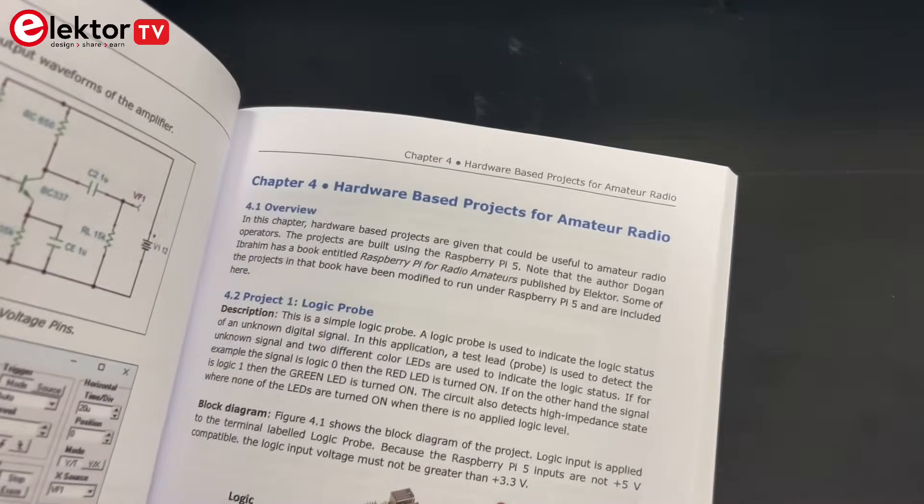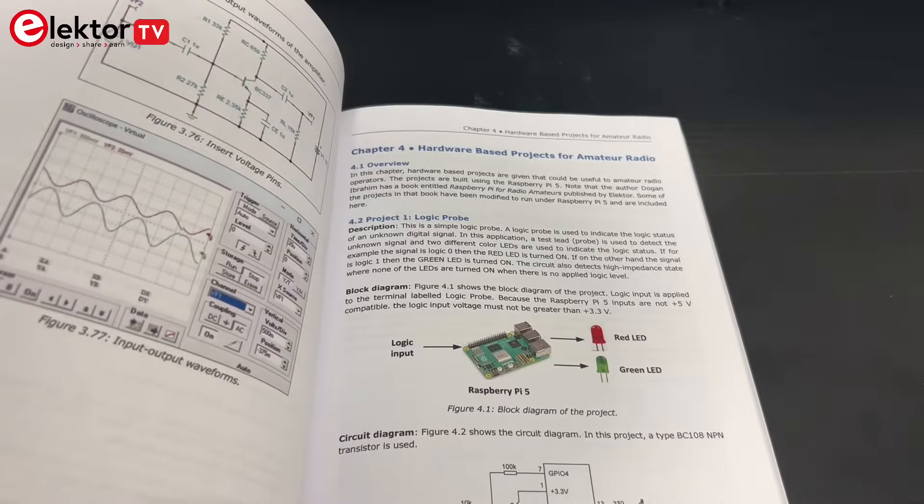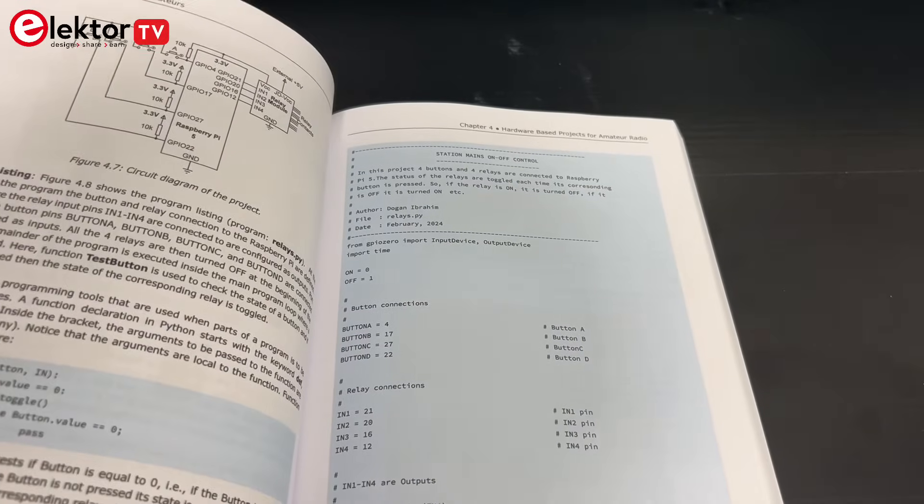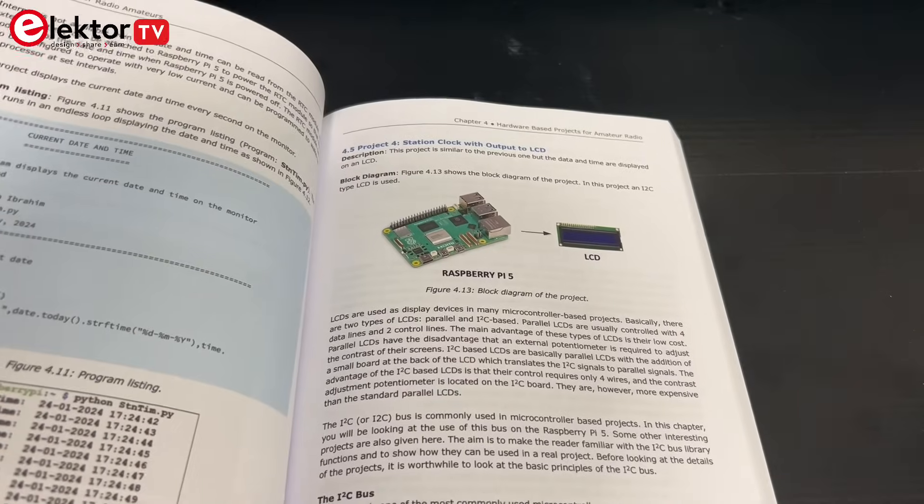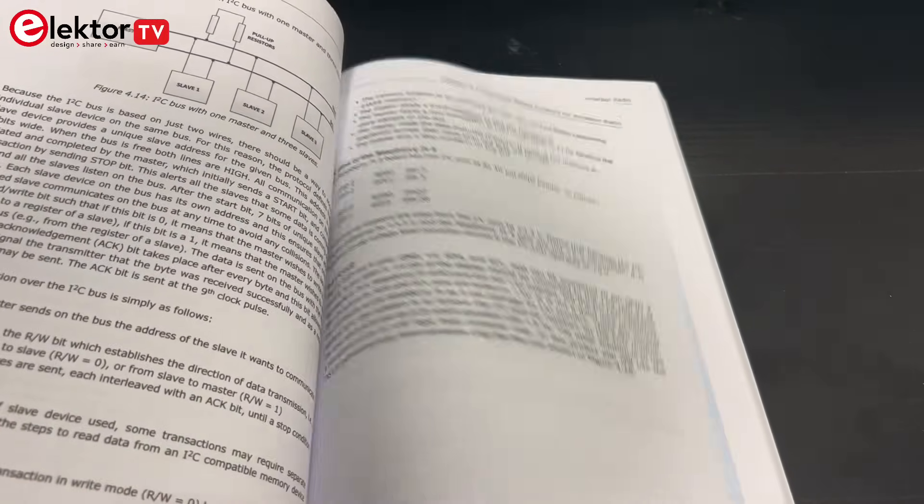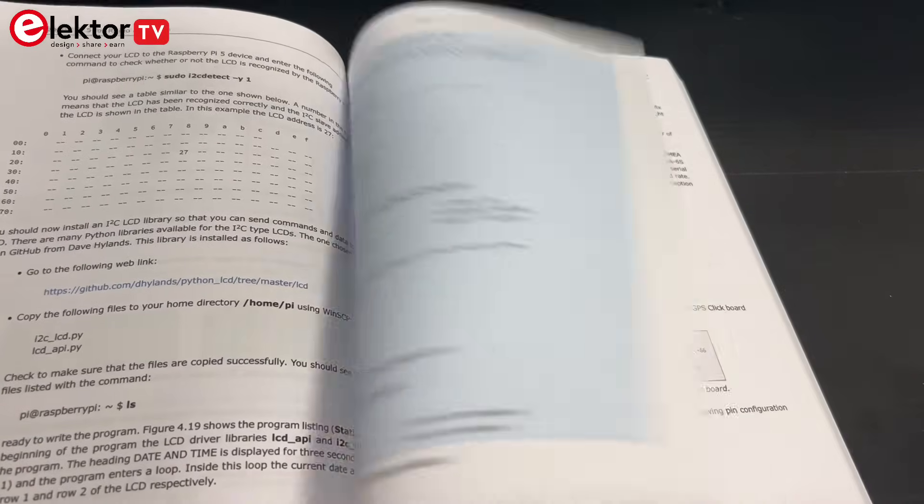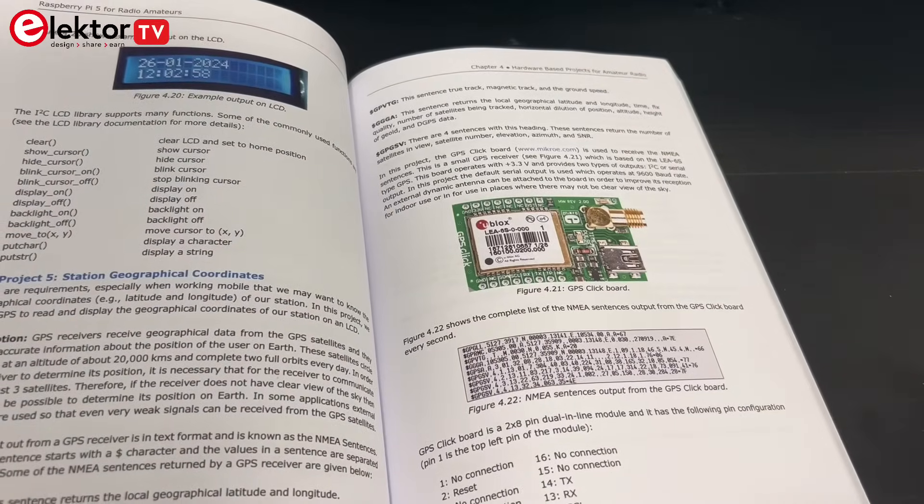Please note that the book uses the Python programming language on the latest Raspberry Pi 5 platform at the time of publishing, and most of the programs will not work on all versions of Raspberry Pi computers. The RTL-SDR devices version 3 and version 4 have gained popularity among radio amateurs because of their very low cost and rich features.